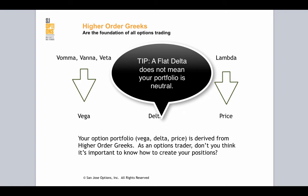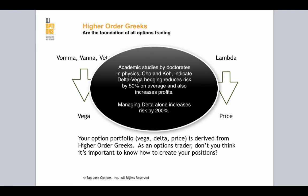You have to do further studies: your Vega actually dictates a large portion of the directionality of that portfolio. So you have to learn to balance your delta-Vega, which is called delta-Vega hedging. There have been academic studies by doctors with degrees in physics on delta-Vega hedging.